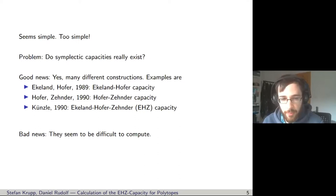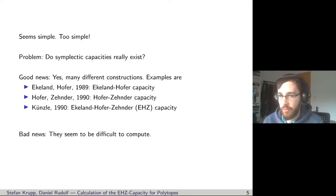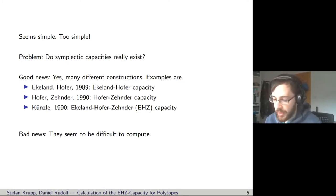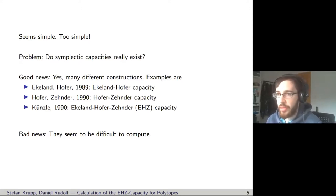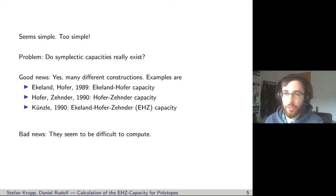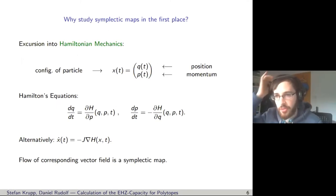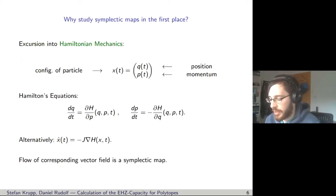Before I get to the definition of the EHZ capacity, some bad news. Symplectic capacities in general are very difficult to compute. They were viewed as theoretical objects for a long time, and when people tried to compute them, they found the approaches break down very early — the problems look very different from each other computationally. But why are we interested in symplectic capacity at all? Why equip R to the power 2n with an anti-symmetric bilinear form?